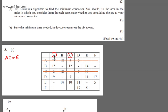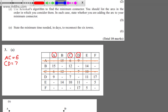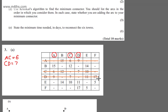We now consider the lowest weight in column A and column C. I've got 15, 9, 12, 7, or 10. We can see that's going to be 7, and that's C to D. So I'm going to connect D. C to D will be equal to 7. I'm now going to cross out the row for D.